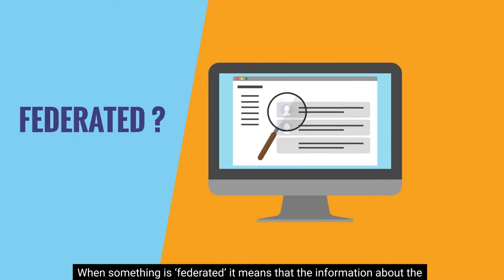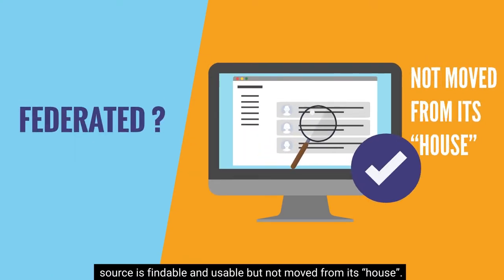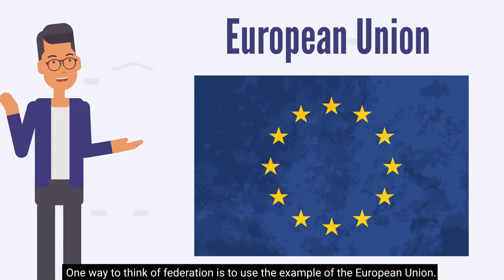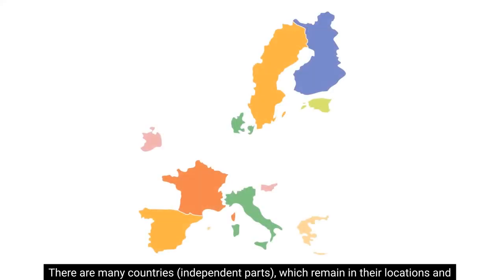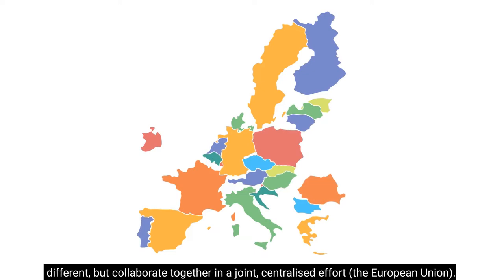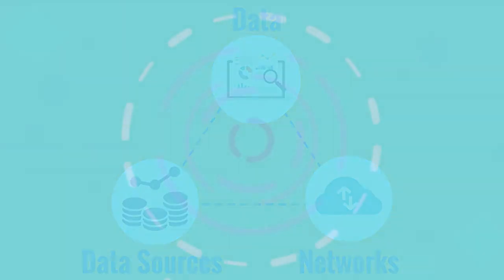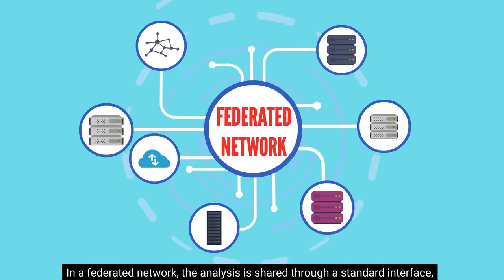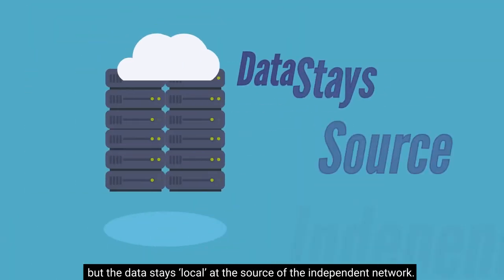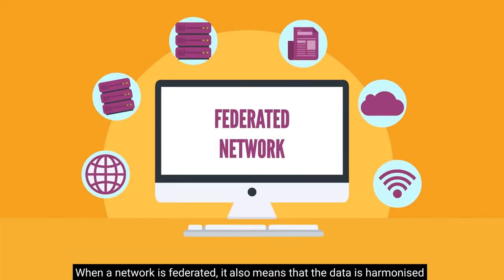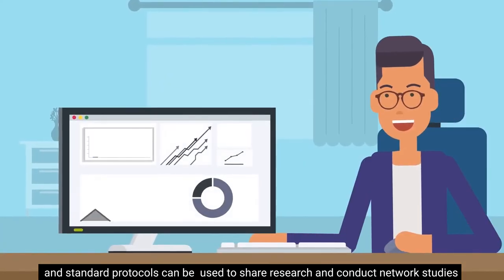So what is a federated data network? First, what does federated mean? When something is federated, it means that the information about the source is findable and usable, but not moved from its house. One way to think of federation is to use the example of the European Union — many countries or independent parts which remain in their locations and are different, but collaborate together in a joint centralized effort. The same principle can apply to data. In a federated network, the analysis is shared through a standard interface, but the data stays local at the source.